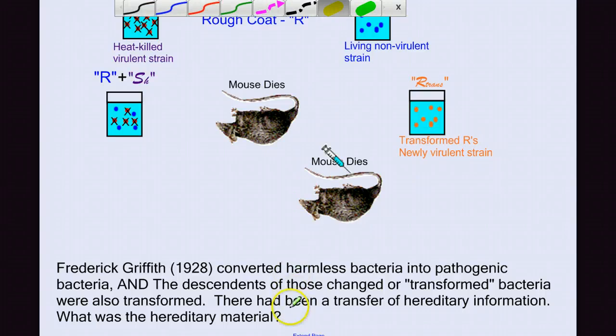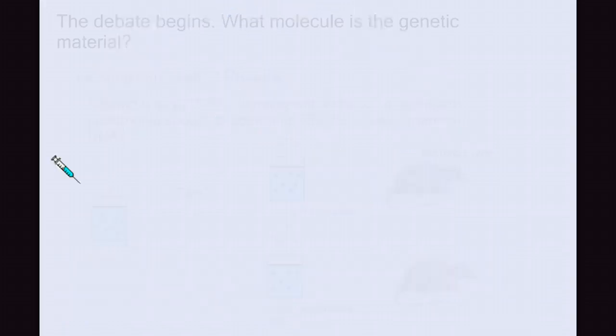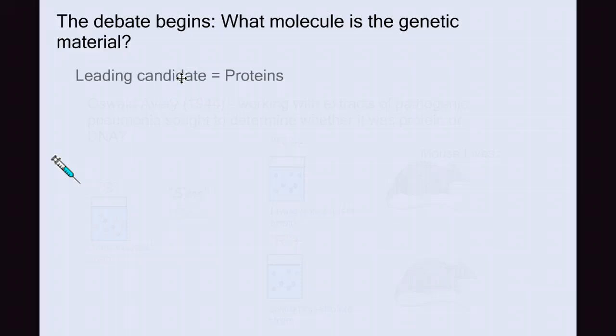The question was, what is that material? The debate began. What molecule is the genetic material? And in the scientific community, the leading candidate were proteins. They understood a lot about proteins at the time, in terms of their complex, three-dimensional shapes, and it seemed to be the leading candidate for the molecule in cells that could be the genetic material.